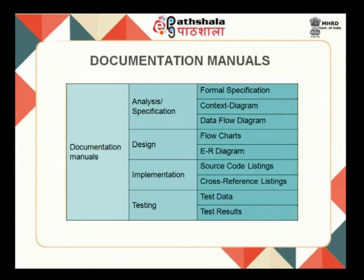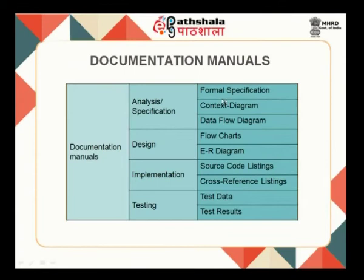As part of documentation manuals, the important components are: analysis and specification, design, implementation, and testing. Whenever we want software to be properly engineered, it should follow this sequence — analysis, design, implementation, and testing. This applies not just to software but to any piece of engineering. If it goes through these phases — analysis, design, implementation, and testing — it will be purely engineered. For software, implementation is also called coding.